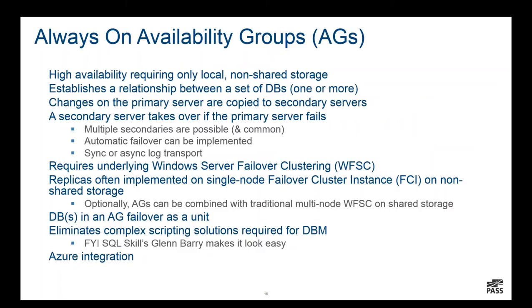Now let's get this show on the road with a brief overview of Availability Groups. Again, this is high-level — the main part of the deck focuses on new features. Here are some high-level characteristics most of you are already familiar with. Non-shared storage is a hugely important option of AG architecture — especially local storage — and can result in significant performance, infrastructure, and cost benefits. An availability group refers to the coordinated failover of multiple databases, unlike database mirroring where only one database can be involved per mirror. Multiple secondaries are common, failover can be sync or async commit mode, and some secondaries can be rendered read-only.